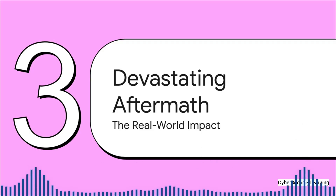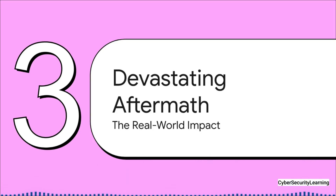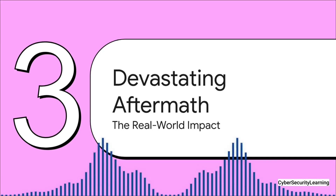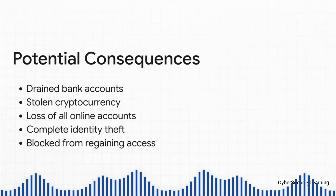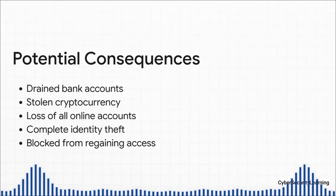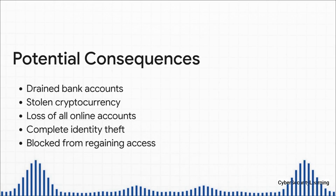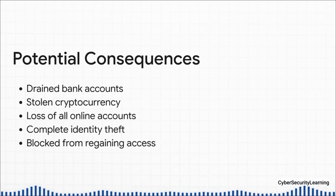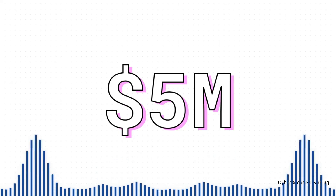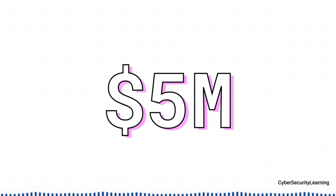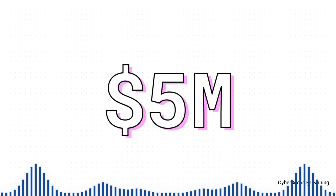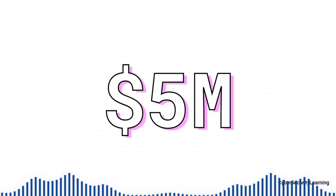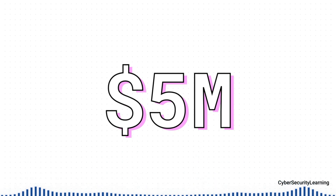Once the swap is done and the attacker has your number, things get really bad, really fast. They can get into your bank account and start wiring money out, log into your crypto exchange and empty your wallets in minutes — gone forever. They'll take over your email and from there hijack every other account you have. There's a famous case where one hacker stole over five million dollars in crypto by doing this, targeting people he knew were into crypto, swapping their SIMs, and bypassing two-factor authentication on accounts at places like Coinbase. And sometimes attackers don't even need to be smooth talkers — they just find a corrupt employee at the phone company and pay them a bribe to do the swap.